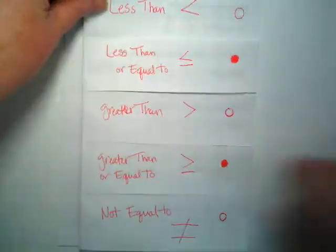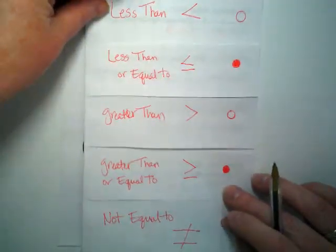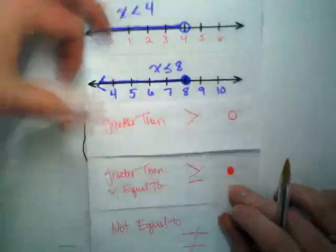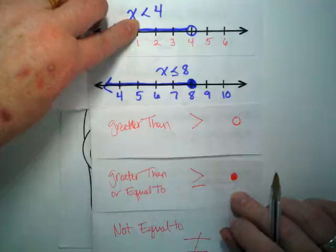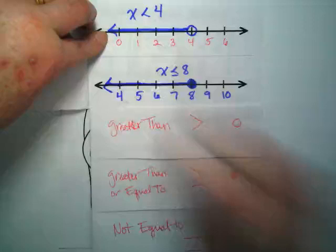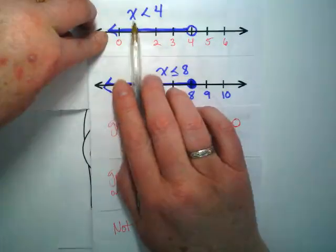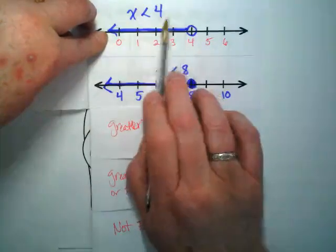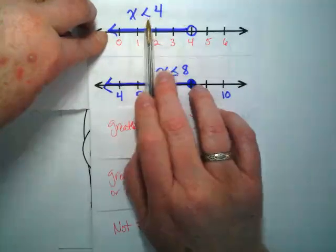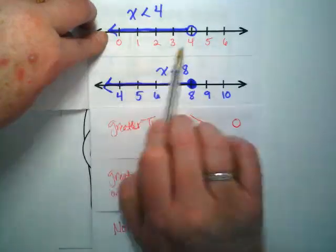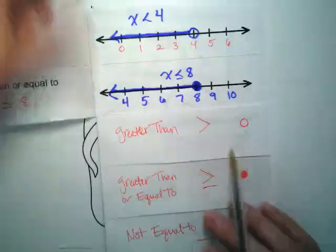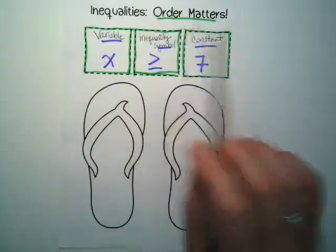I'm going to go back and look at this one we just made a few minutes ago. When we were graphing these, did you notice that the arrow on the symbol matched the arrow that we ended up putting on the graph? That's because I always had the variable on the left and the constant on the right. If the variable is on the left and the constant is on the right, the symbol is going to tell you which way your graphing on the number line should go. That's why order matters.